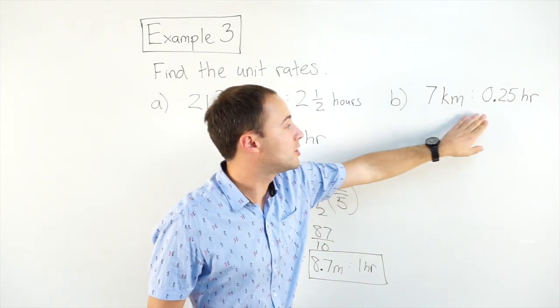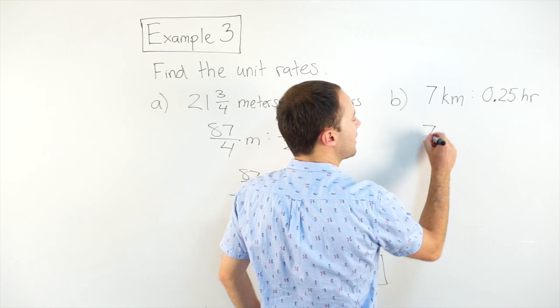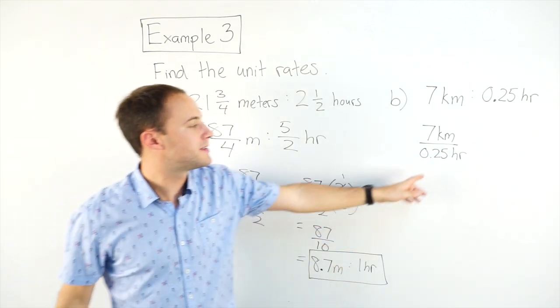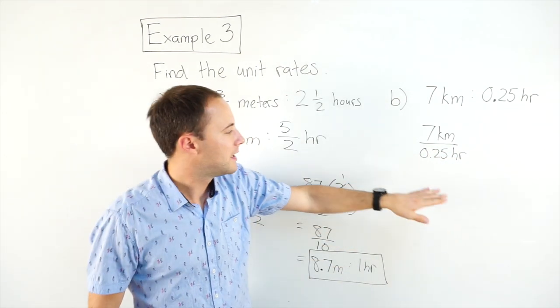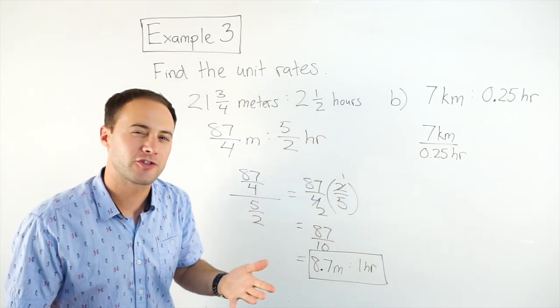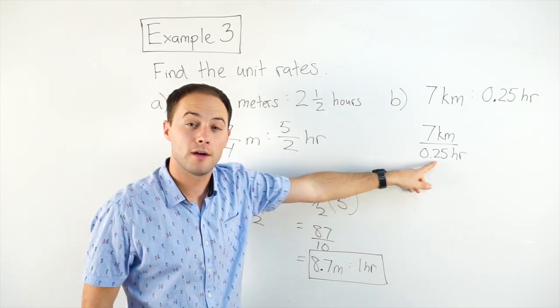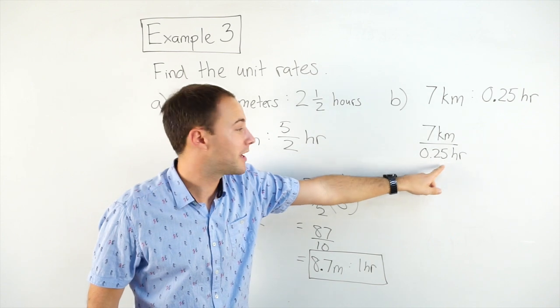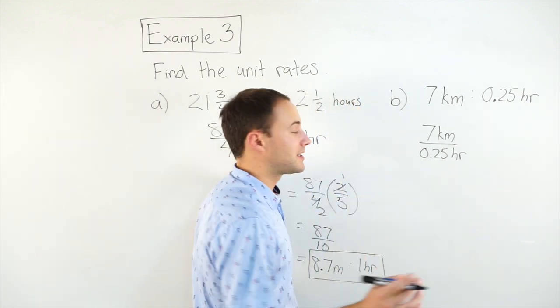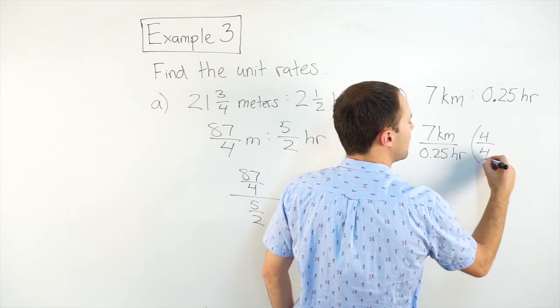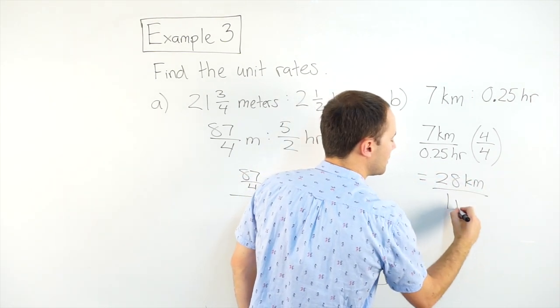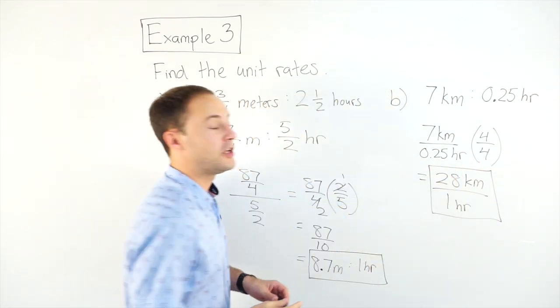Now let's look at B. 7 kilometers to 0.25 hours. Now with this one, I'm going to write it 7 kilometers over 0.25 hours. Now remember the goal is to get this denominator to 1. So instead of dividing, I could divide by 0.25. But instead of doing that, there's a little trick. Maybe you're noticing it. If I multiply this by 4, that would give me to 1 hour. And if anything I do to the denominator, I should do the same thing to the numerator to make sure it stays equivalent. So a quick little tip here is just multiply by 4 over 4, which is going to give me 28 kilometers per 1 hour. And there is my unit rate there. Here's some more to try on your own.